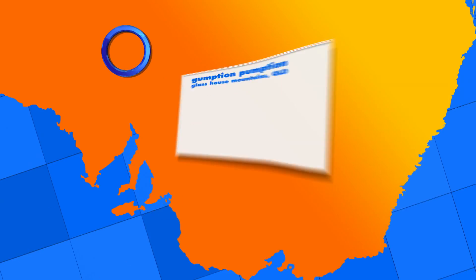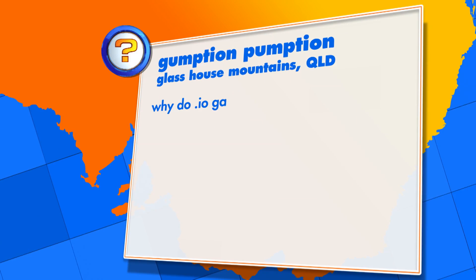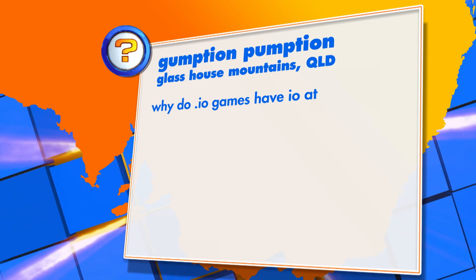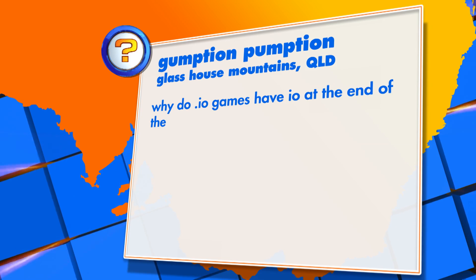Moving on now to another question, and this one comes from GumptionPumption in the Glasshouse Mountains, Queensland. Thanks, GumptionPumption. That's a really good question. Why do .io games have IO at the end? That is a tongue twister and a brain twister. I think we should ask Darren.